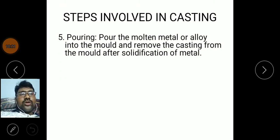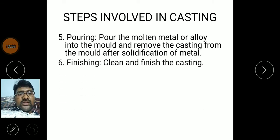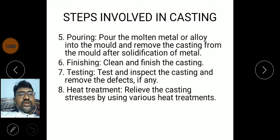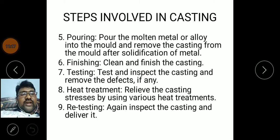Step five: pouring — pour the molten metal or alloy into the mold and remove the casting from the mold after solidification. Step six: finishing — clean and finish the casting object by removing it from the molding sand and removing any dust particles sticking to it. Step seven: testing — inspect the casting and remove defects if any, such as blow holes, pin holes, or other defects. Step eight: heat treatment — remove casting stresses and improve corrosion resistance, wear resistance, and heat resistance.